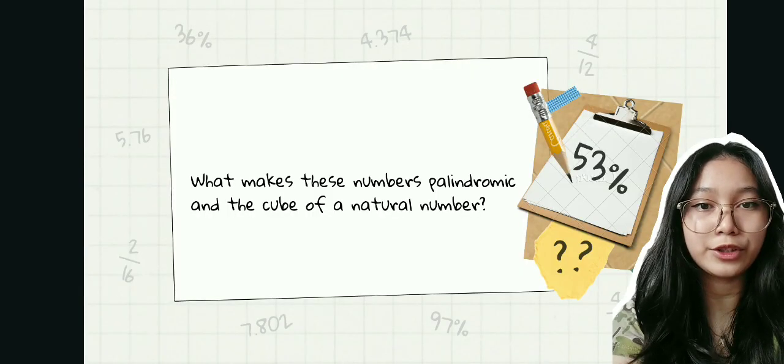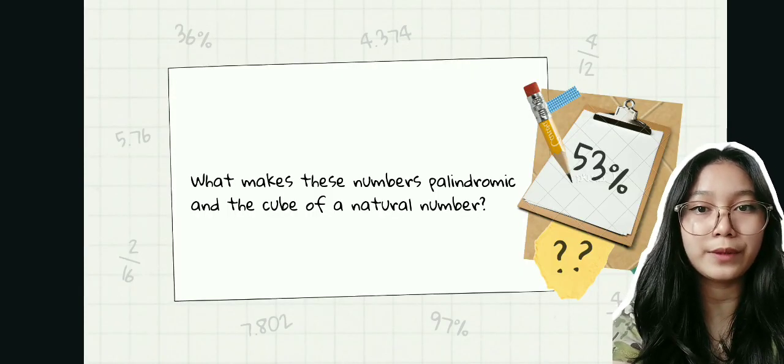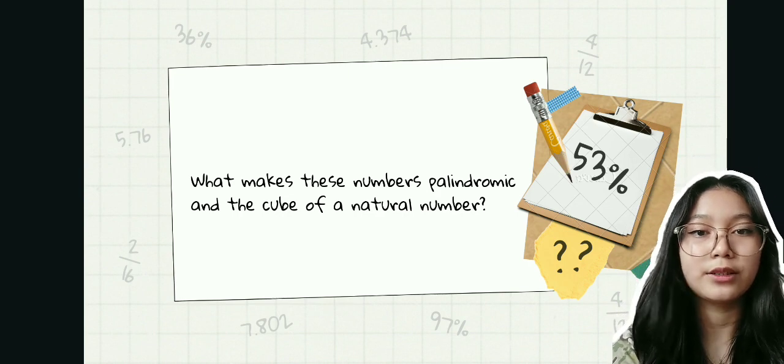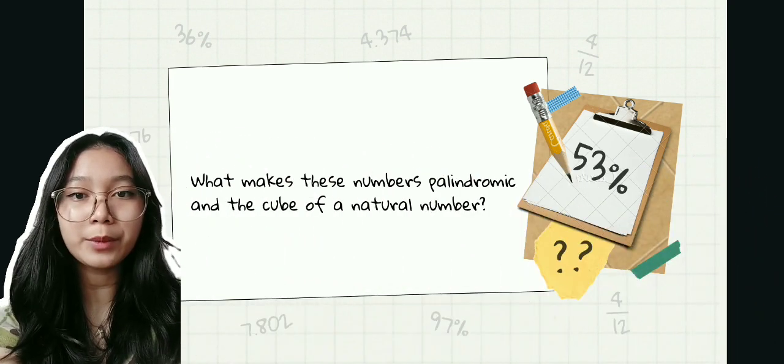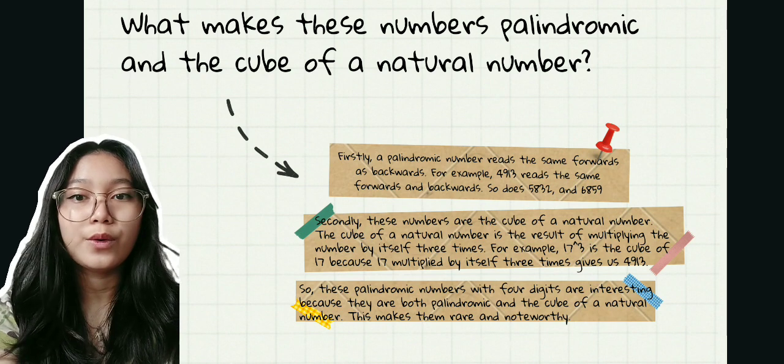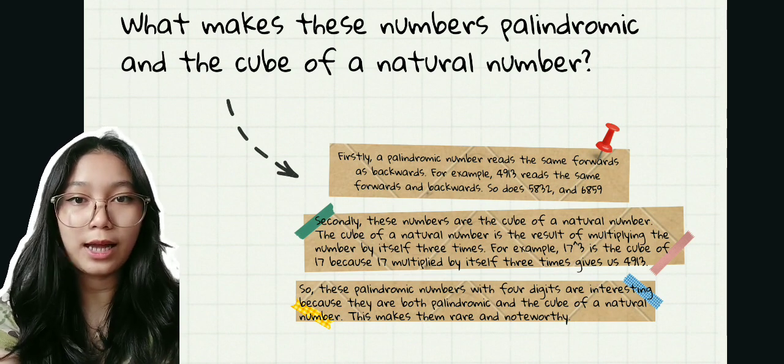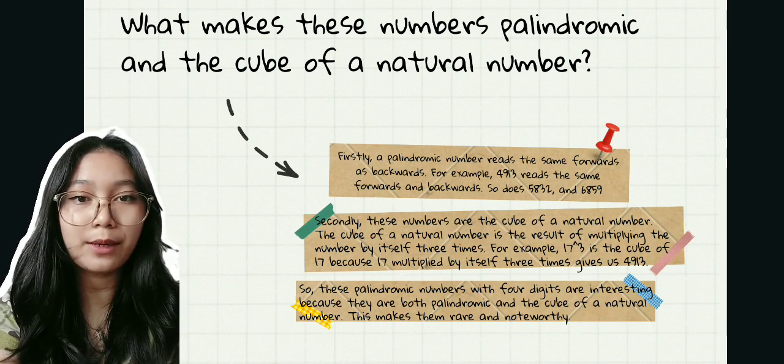What makes these numbers palindromic and the cube of a natural number? Firstly, a palindromic number reads the same forwards as backwards.